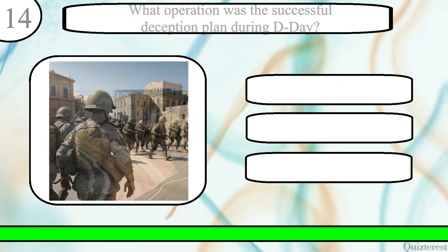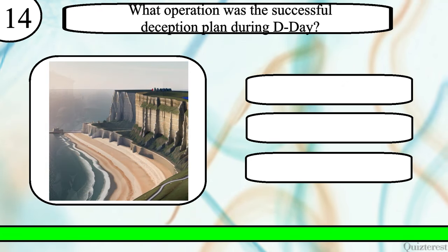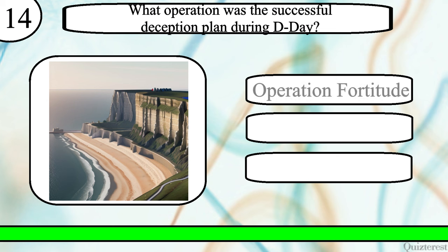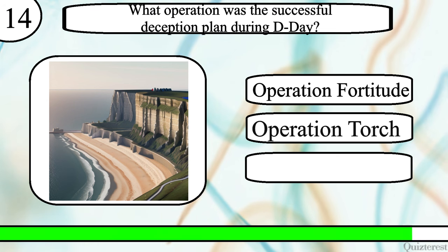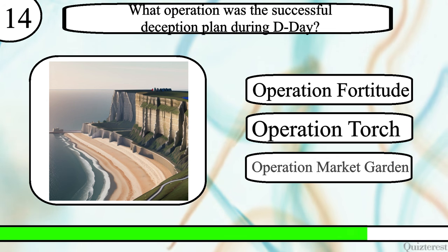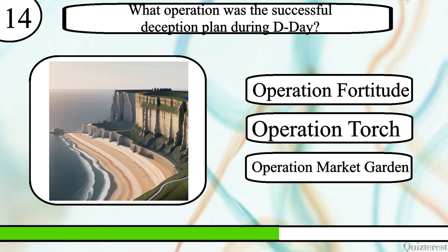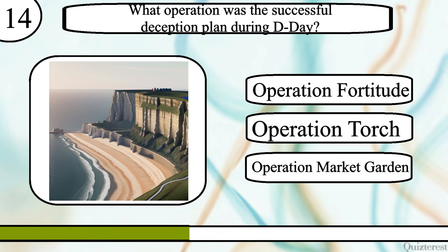Question 14. What operation was the successful deception plan during D-Day? Operation Fortitude, Operation Torch, or Operation Market Garden?